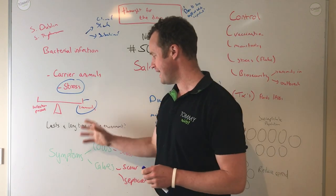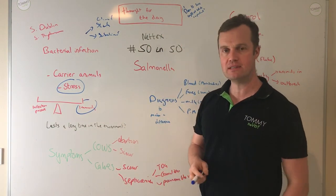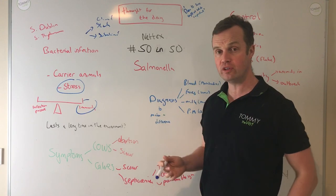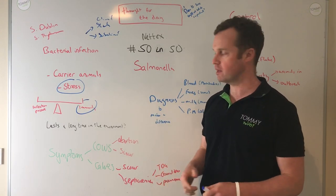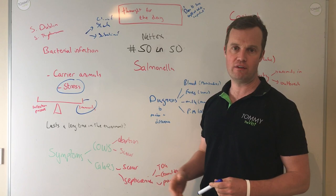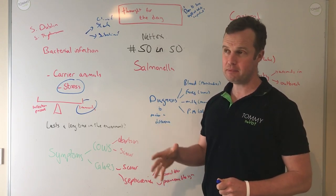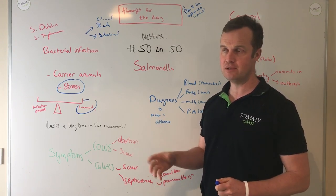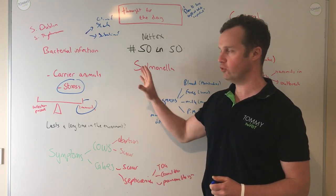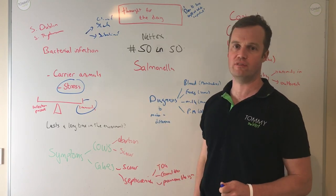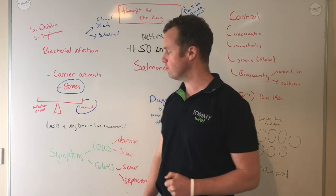Salmonella can last for months in the environment — it can last for months in faeces, so slurry becomes a risk if you're spreading slurry on farm from other places. Carrier animals, birds spreading it — there is potential there, but the most likely source of disease spread is in animals and animal faeces.